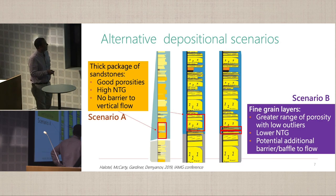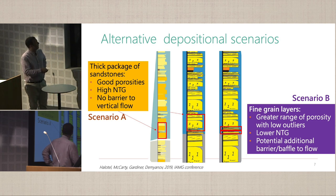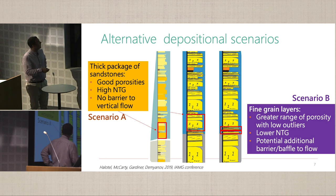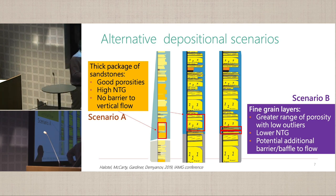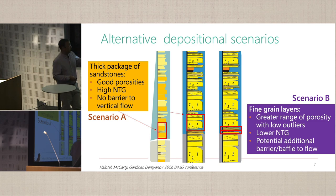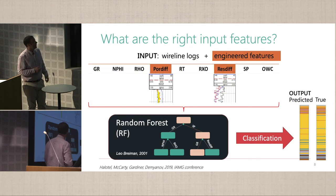The problem I want to share is that the same interval can be interpreted as good quality, high-density turbidite with high NTG and no barriers to flow, or it could be interpreted as these hybrid event beds, which have low NTG potential and act as baffles to flow.